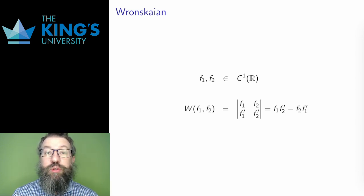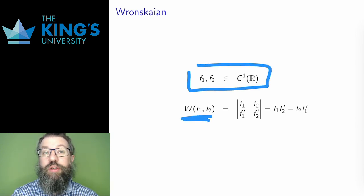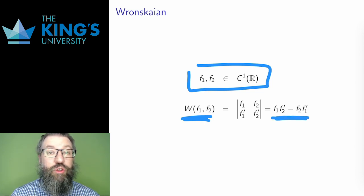If I have two differentiable functions, there is a strange combination of the functions and their derivatives called the Wronskian. It is written W of F1 and F2, and calculated by F1 F2' minus F2 F1'.